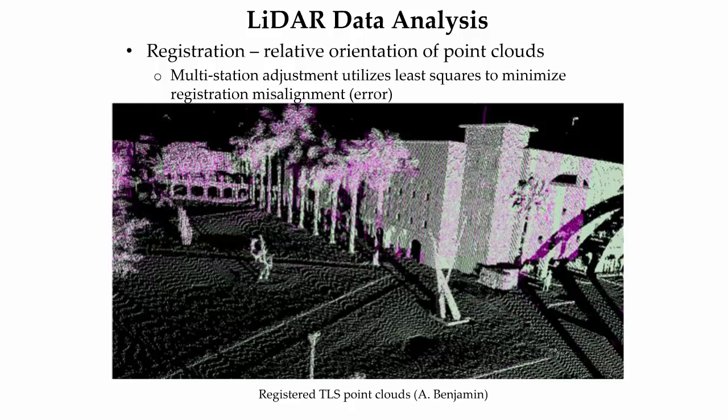For stationary terrestrial laser scanning, or TLS, the process of combining point clouds from multiple scan setups relative to each other is called registration. The most common TLS registration technique is the use of common scan targets to register the point clouds in one 3D coordinate system. When the necessary number of targets are unavailable, other registration techniques such as the iterative closest point method utilize point cloud matching algorithms based on point, line, and surface matching. If there is a point cloud misalignment of the registered scans, a multi-station adjustment tool uses a least squares adjustment to minimize the error. In the image, two point clouds — one tan and one pink — were registered using common scan targets.